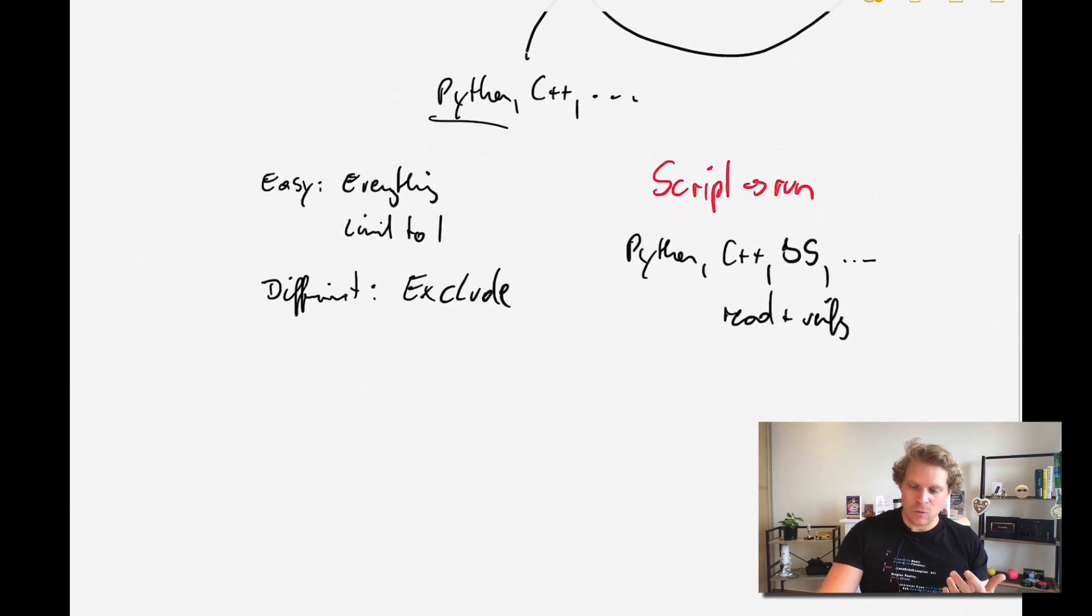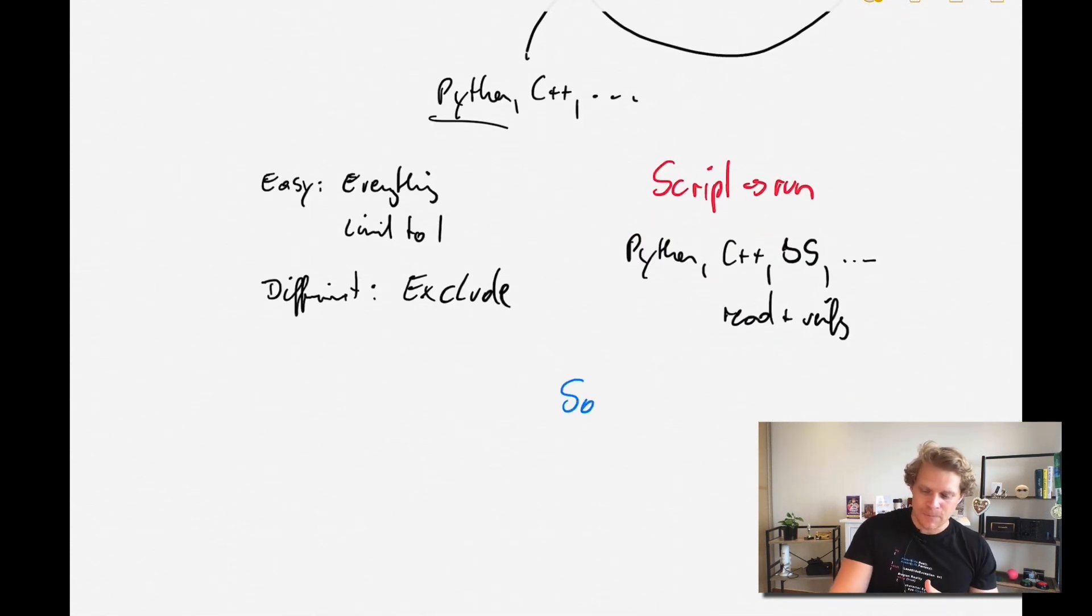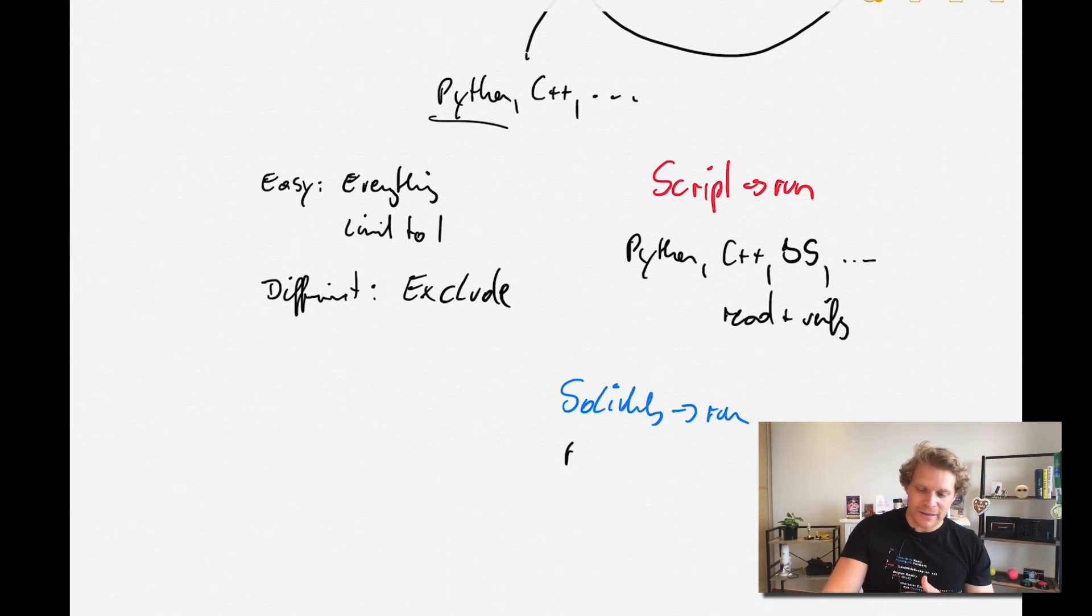And so even in Ethereum, what happens is you use Solidity to run it and to execute, but you can use, for example, Python or Rust and so many other languages to read and verify.